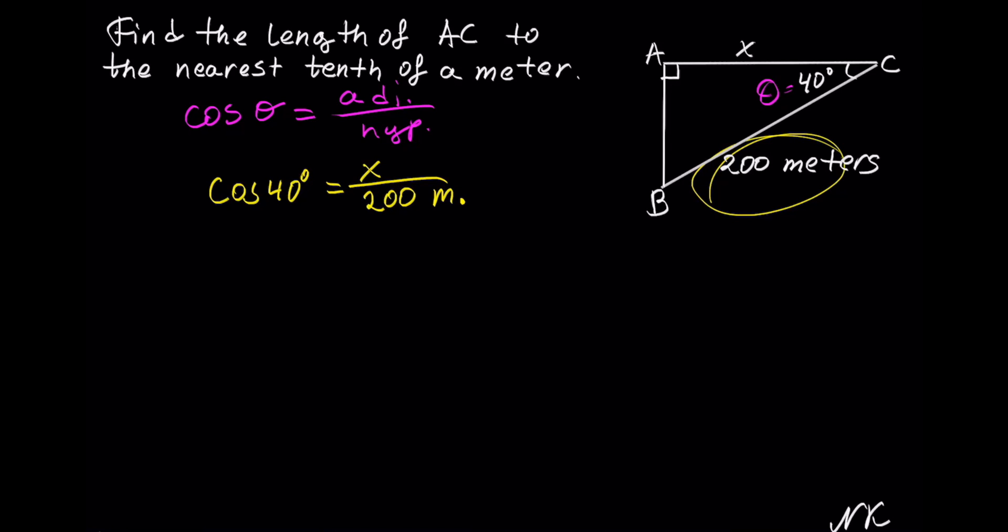Let's solve for X. We have that X is being divided by 200 meters. The inverse of that would be to multiply by 200 meters. And whatever we do to one side,